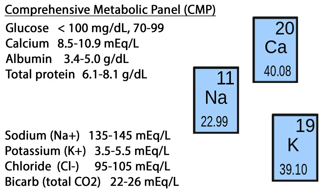Calcium measures the amount of free calcium in the blood, ranging from 8.5 to 10.9 milliequivalents per liter. Albumin is a protein made by the liver that keeps fluid from leaking out of blood vessels, nourishes tissues, and transports hormones, vitamins, and drugs throughout the body; normal range is 3.4 to 5.0 g per deciliter. Total protein provides general information about a person's nutritional status and conditions involving major organs such as the kidney and liver; normal range is 6.1 to 8.1 g per deciliter.